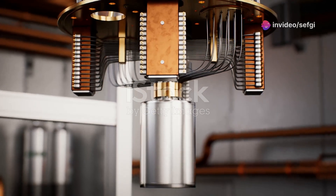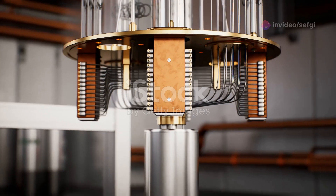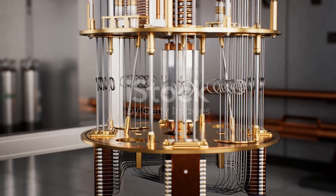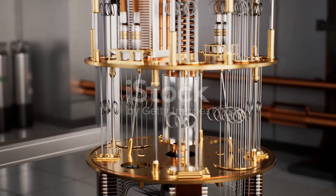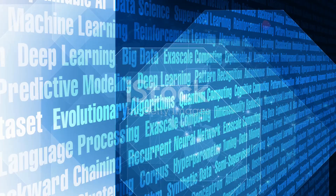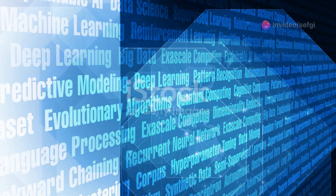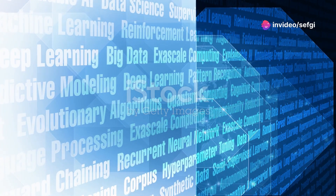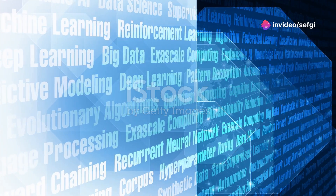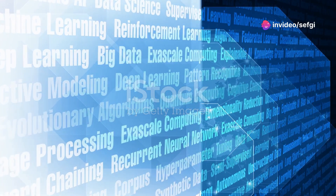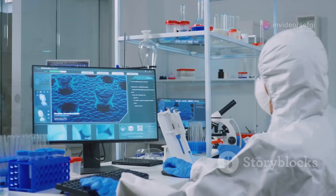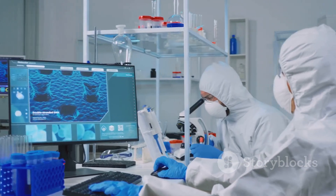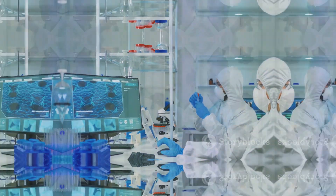Quantum computing is another area where the uncertainty principle is crucial. Quantum computers use qubits, which can represent both zero and one simultaneously, thanks to the principles of superposition and entanglement. The uncertainty principle influences how qubits interact and are measured, affecting the computations these machines can perform. These applications demonstrate the practical importance of the uncertainty principle.